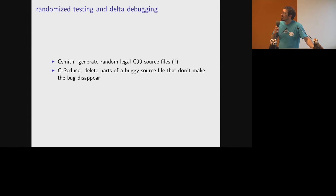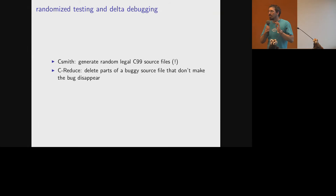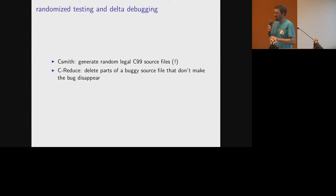C-Reduce is specifically targeted at C source, but there are other tools for doing this kind of thing on other kinds of files. Both the randomized testing and delta debugging are super useful techniques, and I recommend seeing whether you can apply them to problems you run into.